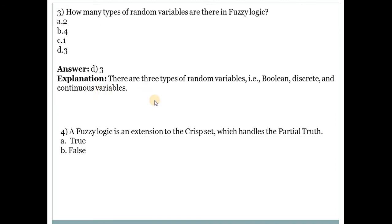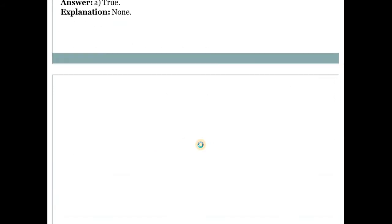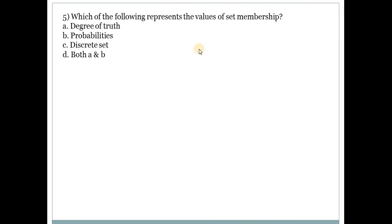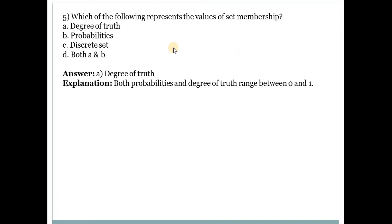Next question is: A fuzzy logic is an extension to the crisp set which handles the partial truth. Answer is A, that is true. So fuzzy logic is extension to the crisp set, that is traditional set. Which of the following represents the values of set membership? Answer is A, degree of truth.